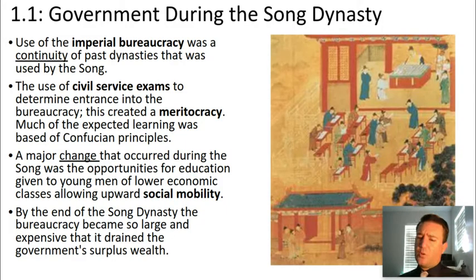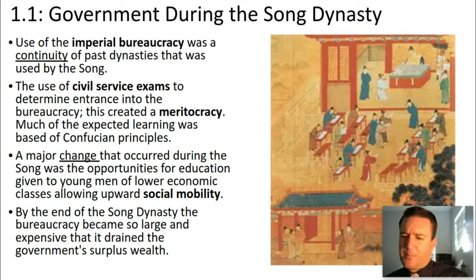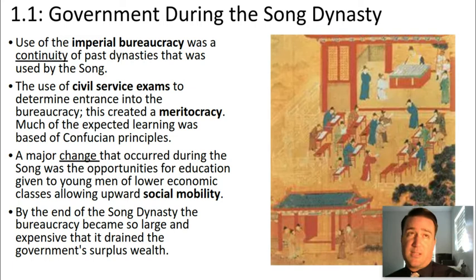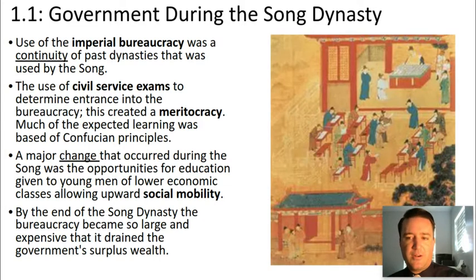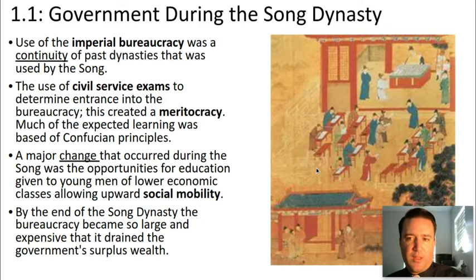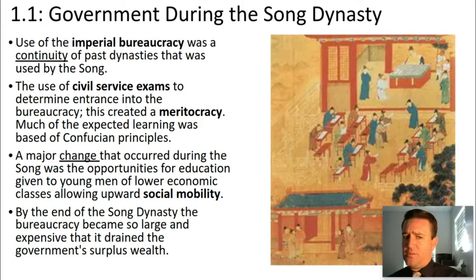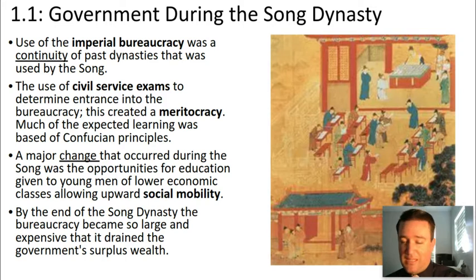The Song dynasty utilized traditional methods of Confucianism and an imperial bureaucracy to maintain and justify its rule. The imperial bureaucracy is how they centralized their rule — not a new concept during the Song dynasty, going back way before. The Han dynasty was extremely successful in creating a massive bureaucracy with government officials who were highly trained and specialized to deal with matters important to maintaining a stable society.